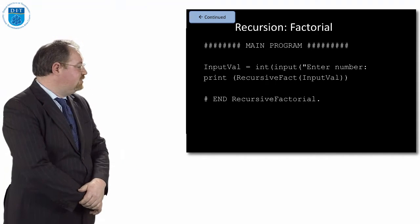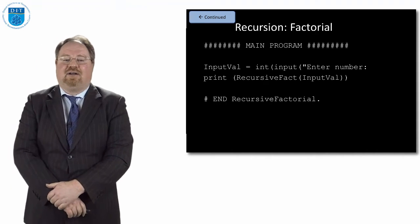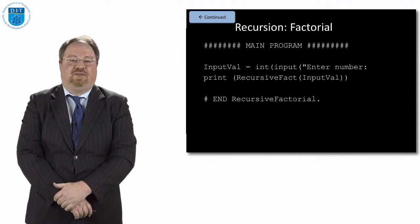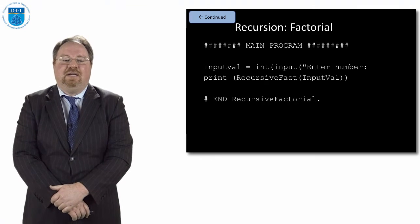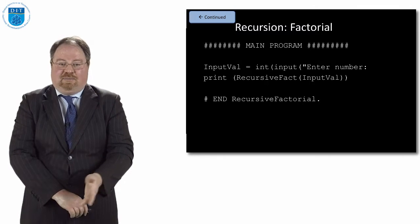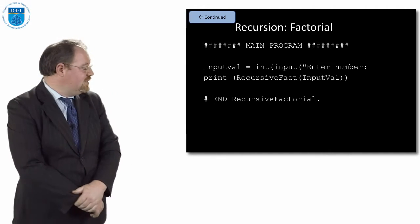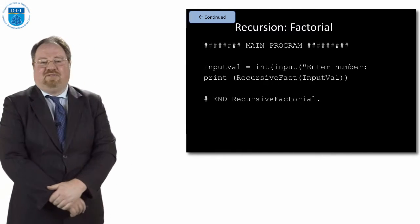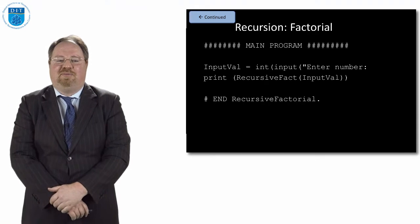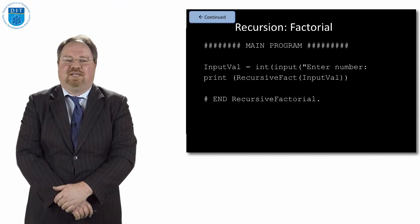So if they type in the value 10, it calls recursive_fact for the value 10, and that'll print out 10 × 9 × 8 × 7 × 6 × 5 × 4 × 3 × 2 × 1. Easy peasy.